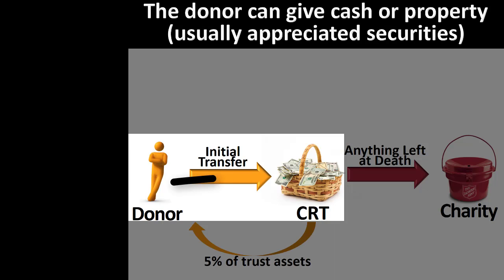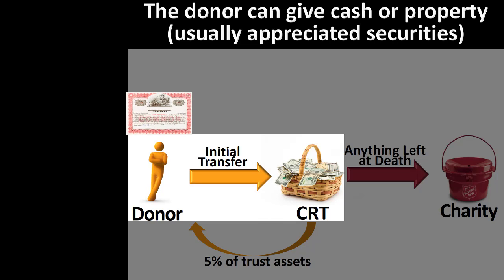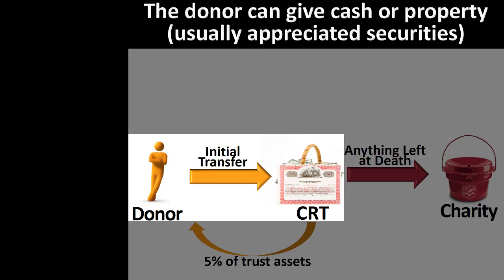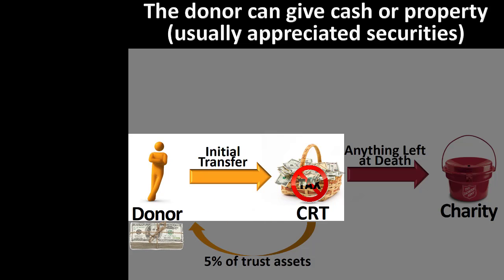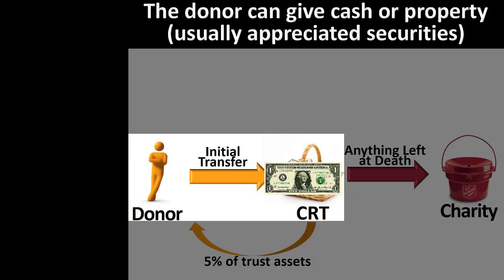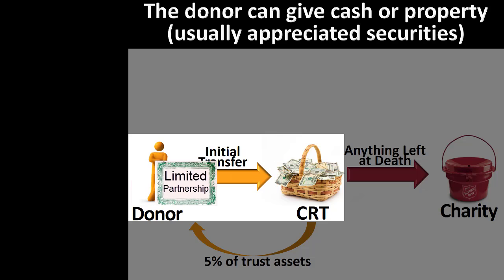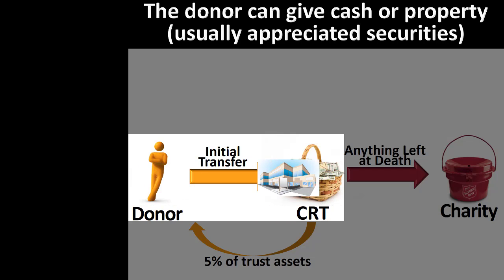A donor can transfer cash or property to a charitable remainder trust. Most commonly, this transfer is of appreciated property. The attraction for transferring appreciated property is that such transfers can avoid capital gains taxes, but still allow the donor to receive payments from the undiminished proceeds of the sale of the transferred property. Transfers to charitable remainder trusts can include cash, shares of stock other than subchapter S-corporation shares, bonds, limited partnership interests, real estate, tangible personal property, and almost any other asset.